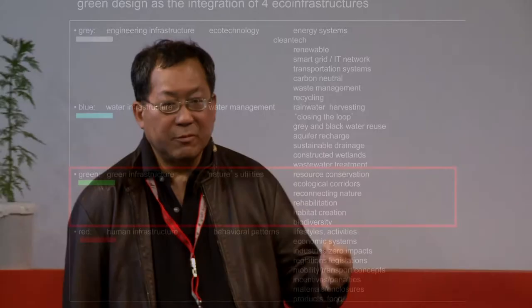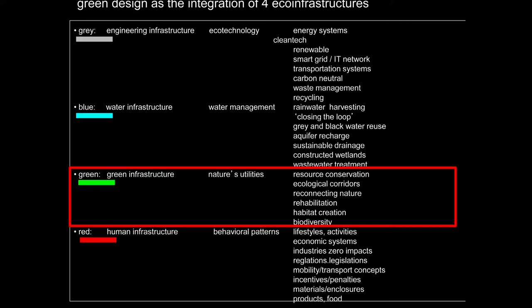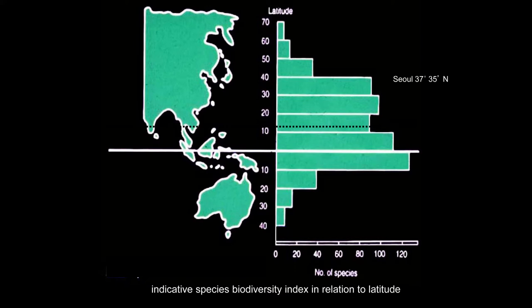The green infrastructure we have to bring back into our built environment, because if you take the room that we are in right now, everything in this room is inorganic, except you and me and the bugs. So, in green design, you can start with any of these eco-infrastructures as a starting point. I'm going to show you a project where we start with the green eco-infrastructure as the starting point for design.